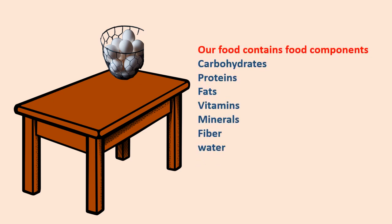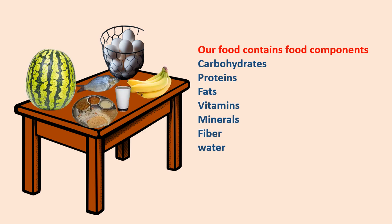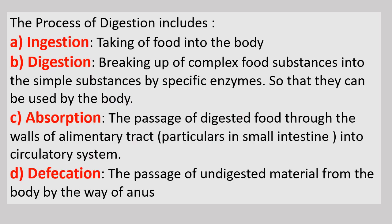We eat various types of food which has to pass through the digestive tract. They have to be converted to substances small enough to be utilized by our body. The process of breaking down of complex substances into simple substances with the help of enzymes and absorbed into the body is called digestion. The process of digestion includes ingestion, digestion, absorption and defecation.